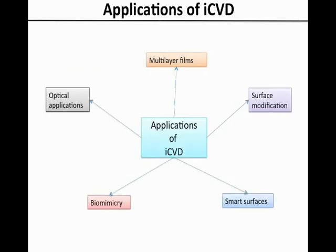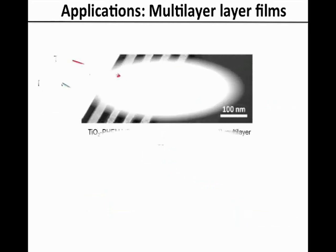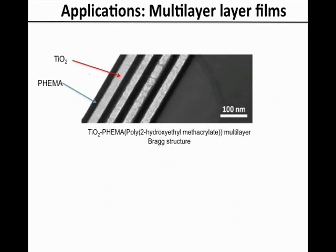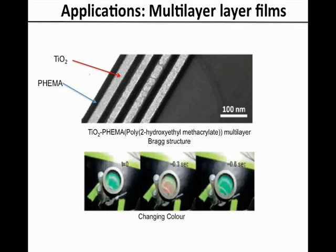Now we will look at some applications of iCVD. Examples include multi-layer films, surface modifications, smart surfaces, biomimetics, and optical applications. By alternating polymer and titanium layers, you can create artificial Bragg structures — the polymer layer being deposited by iCVD. These structures are similar to those observed in some fish scales, and the colour tuning is fast and reversible.